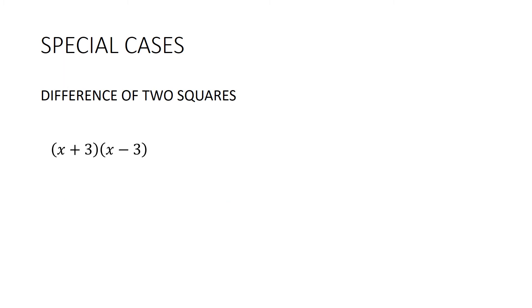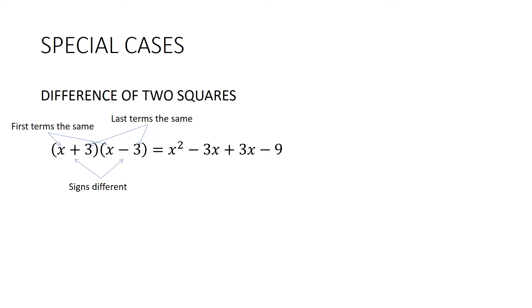The other special case is the difference of two squares. Here we have the same terms but different signs — positive and negative. The middle terms cancel out: x² − 3x + 3x − 9 simplifies to x² − 9. It's called the difference of two squares because that's 3² and that's the difference. When we recognise this pattern we don't need FOIL — we just do the first and the last: for (4x + 1)(4x − 1) the answer is 16x² − 1.